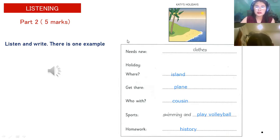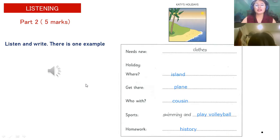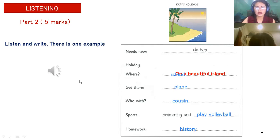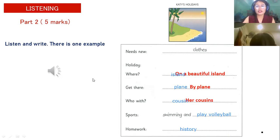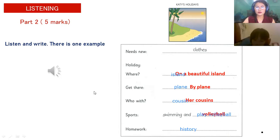Okay, I guess you're done with your answer. Before we check your answer, look at my screen. Where did Katie spend her holiday? In an island. In a beautiful island — good job, you got it, right? So what are you going to ride in going there? By plane. Okay, by plane. Very good. And who's with Katie? Her cousins. Her cousins. So what are they going to do there? They will swimming and play volleyball.